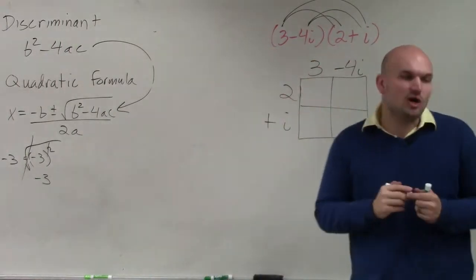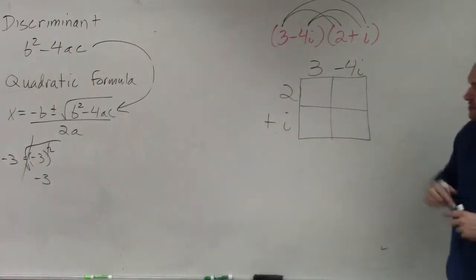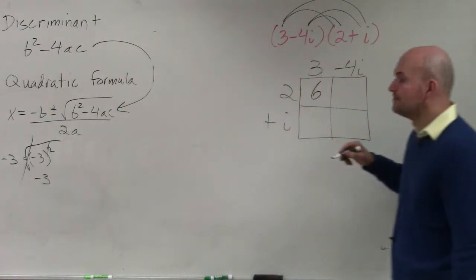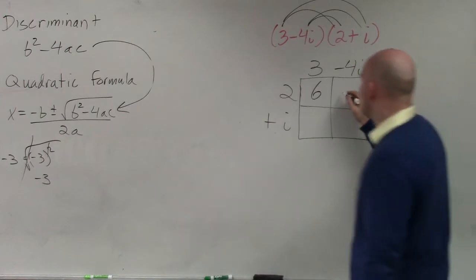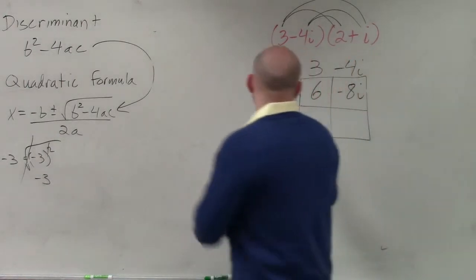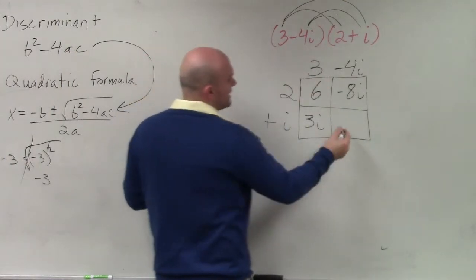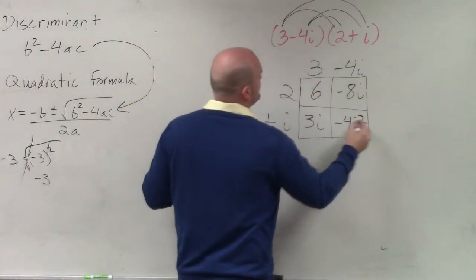Then I basically just multiply to find the area of each of the boxes. So 2 times 3 is 6. Actually, this is a new problem. 2 times negative 4i is negative 8i. i times 3 is 3i. And i times negative 4i is negative 4i squared.